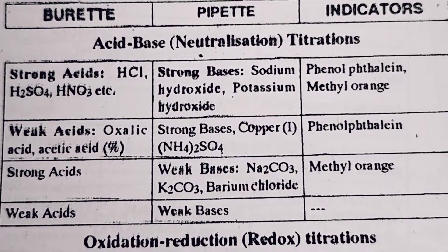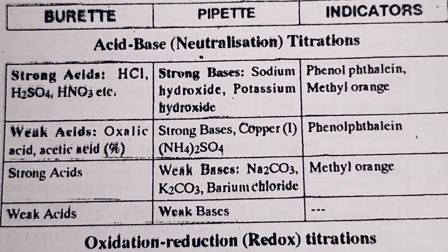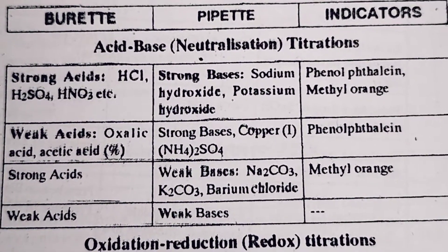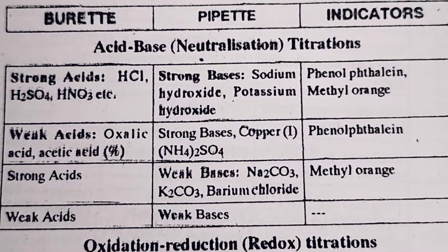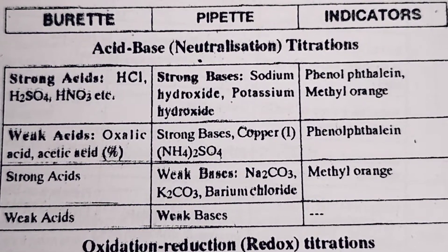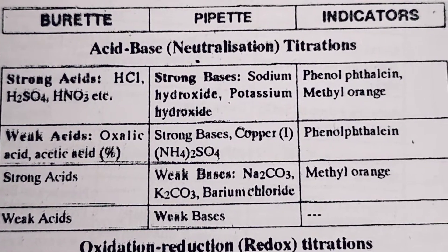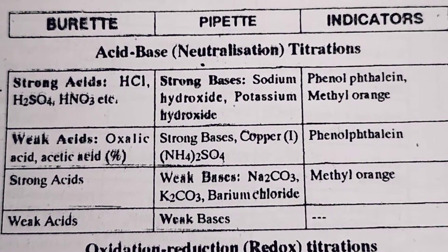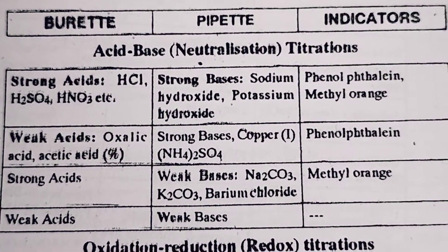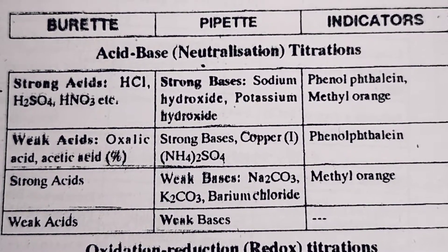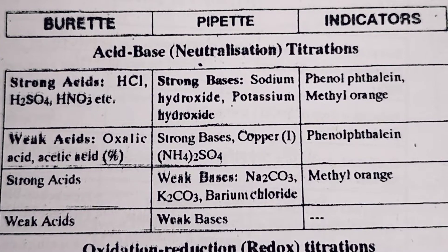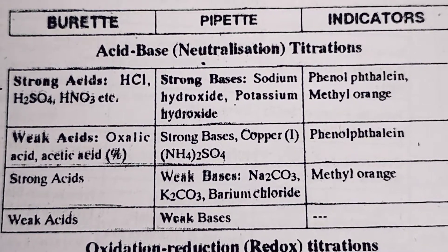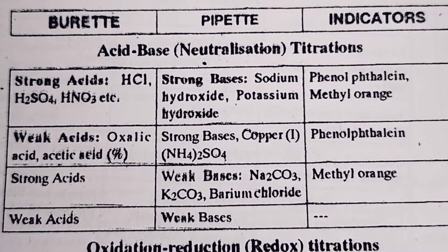We have both strong acid and weak acid. The combinations in acid-base titration include: strong acid vs. weak base, weak acid vs. weak base, and weak acid vs. strong base.